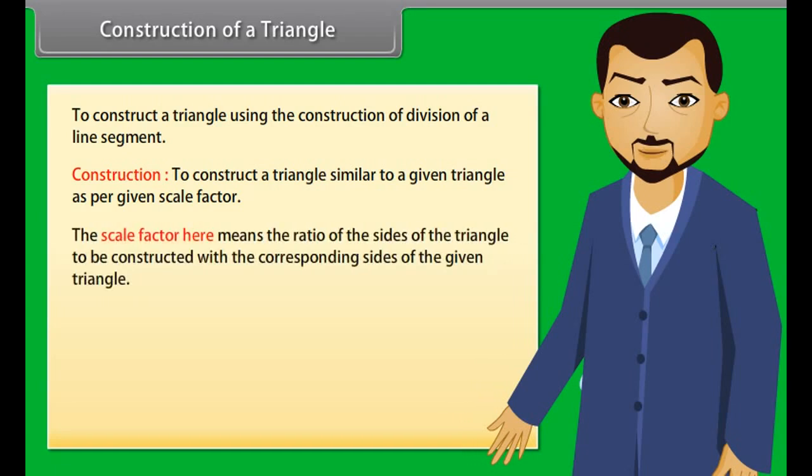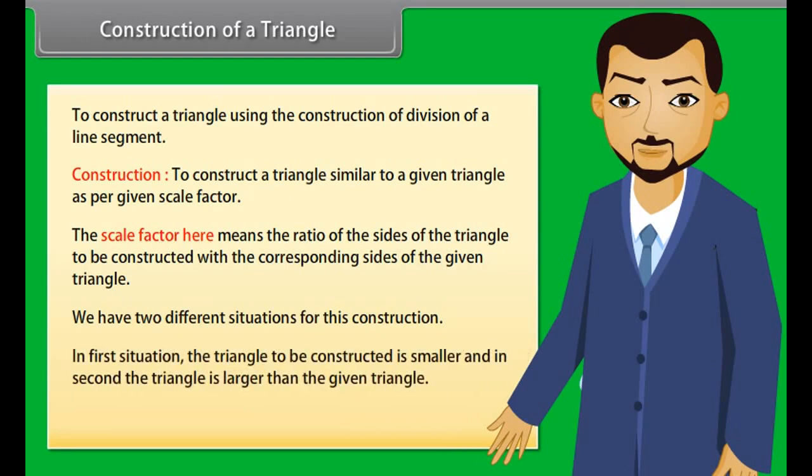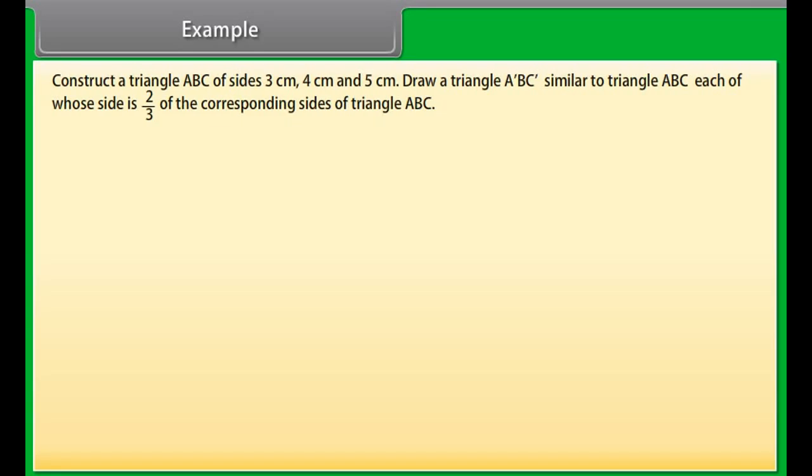Construction of a Triangle. We will now learn to construct a triangle using the construction of division of a line segment. To construct a triangle similar to a given triangle as per given scale factor. The scale factor here means the ratio of the sides of the triangle to be constructed with the corresponding sides of the given triangle. We have two different situations for this construction. In first situation, the triangle to be constructed is smaller and in the second, the triangle is larger than the given triangle. We will solve some examples to understand this.